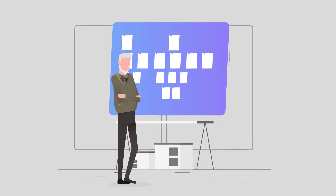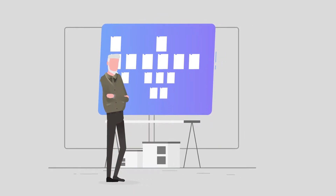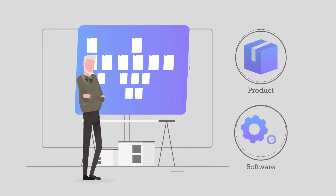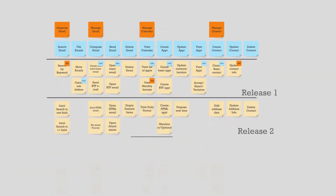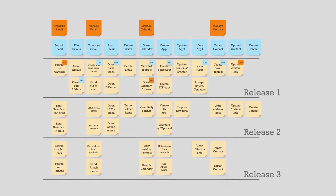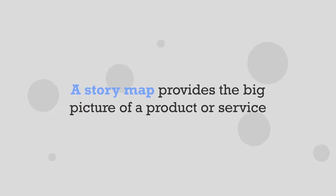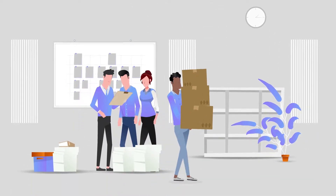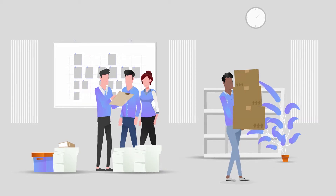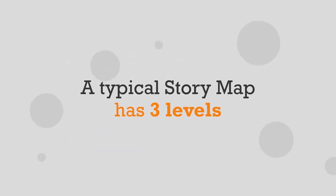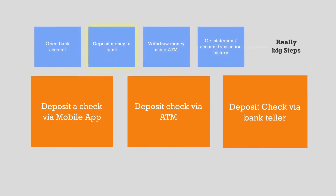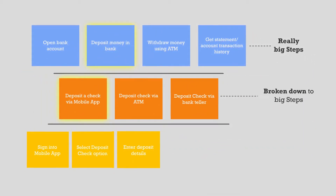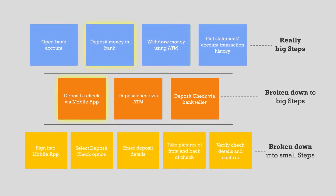Story Mapping is a technique originally created by Jeff Patton that helps product and software teams describe a user's journey through story maps and identify the various features needed in a product to support that journey. A story map provides the big picture of a product or service and helps teams break it down to detailed requirements. A typical story map has three levels: the really big steps of a workflow at the top, broken down to big steps below that, which then get broken down into small steps at the lowest level.